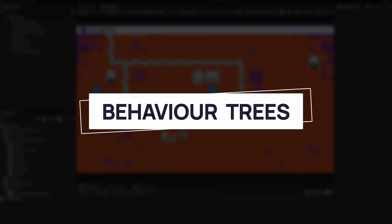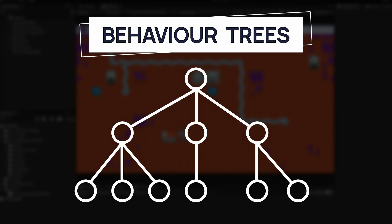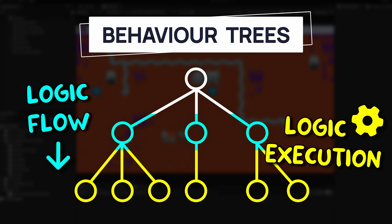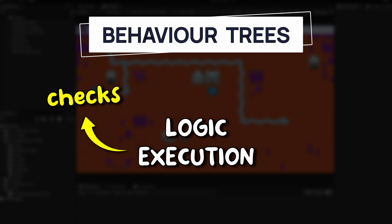As the name implies, behavior trees are a network of nodes that starts from a root and then spreads downwards, with each internal node having more or less children, until you eventually hit the leaves of the tree at the bottom that have no children. The idea is that those nodes in the middle define the flow of the logic, while the leaves at the end define its actual execution. This logic execution usually relies on two types of actions: the checks and the tasks.